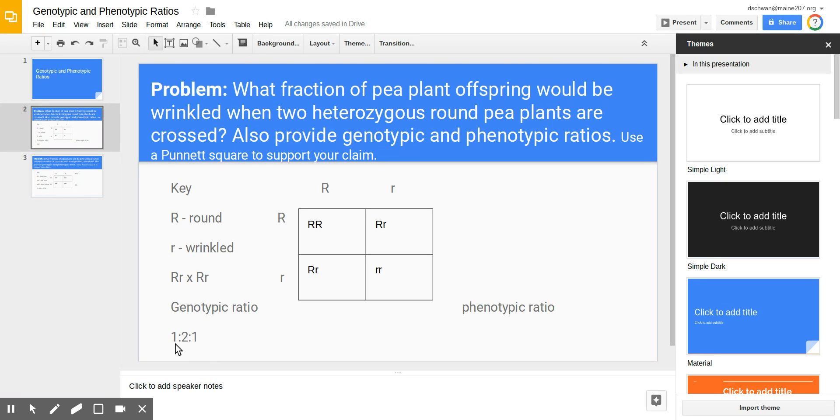So once again we have a genotypic ratio of 1 to 2 to 1. There is one homozygous dominant offspring to every two heterozygous to every one homozygous recessive. The numbers are basically holding the places of those specific genotypes. The homozygous dominant comes first. The heterozygous gets listed second. The homozygous recessive gets listed third.